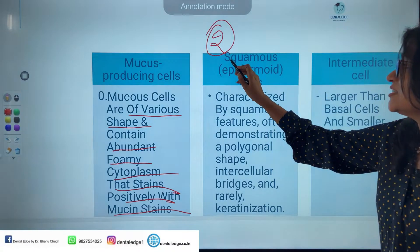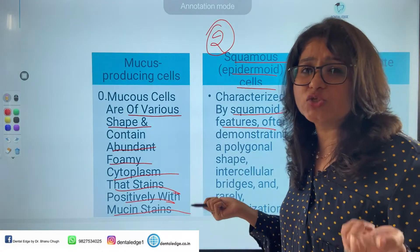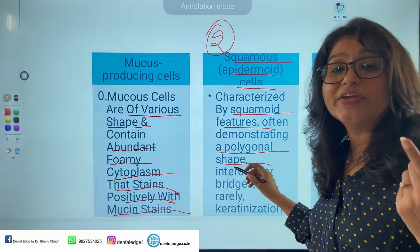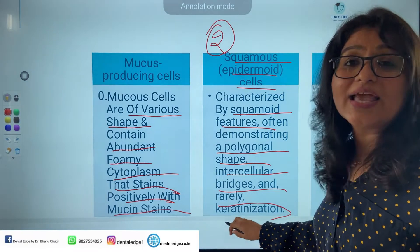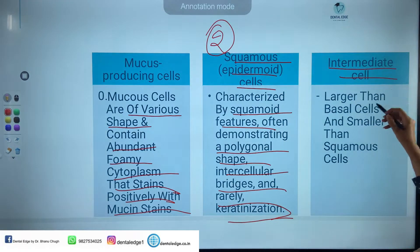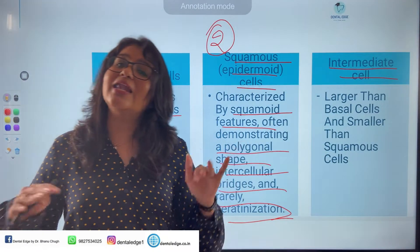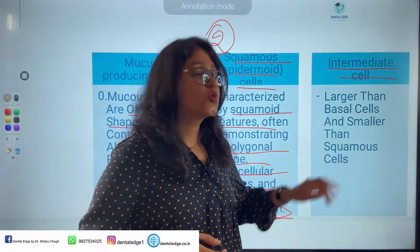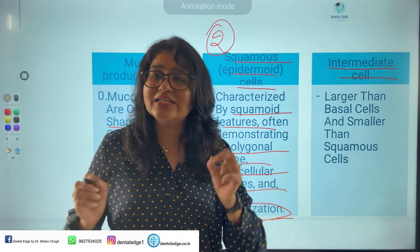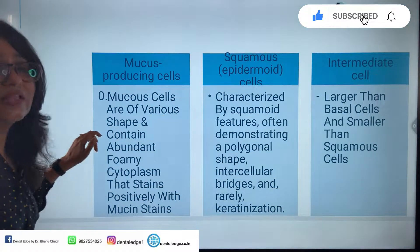The second population are the squamous or epidermoid cells, characterized by squamous features. They are polygonal in shape, have intercellular bridges, and rarely may produce keratinization. The third population, intermediate cells, are progenitor cells — larger than basal cells but smaller than squamous cells — oval shaped with darkly staining nuclei and scanty cytoplasm.